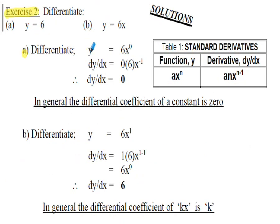Exercise 2a: differentiate y = 6. Writing this as 6x⁰ to give the form ax^n — note that x⁰=1, so the equation is unchanged. Following the differential pattern anx^(n−1), we get 0×6=0 immediately, so dy/dx = 0. This is something to remember: whenever we differentiate a constant, a pure number without an x, it always goes to 0, because y=6 is a horizontal line and the gradient of a horizontal line is 0.